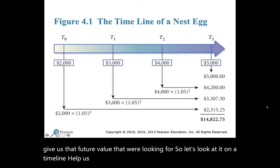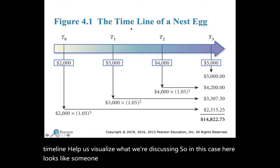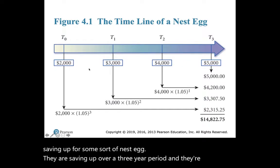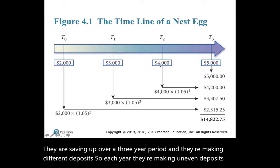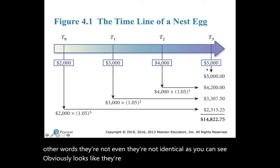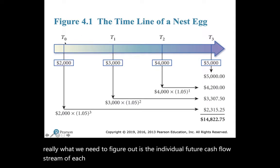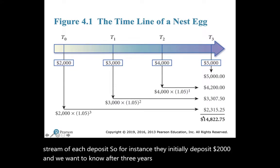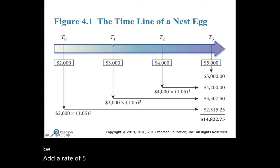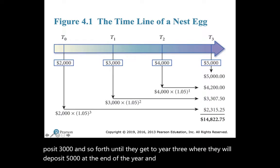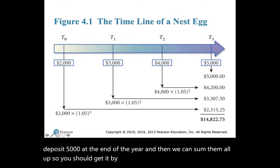Let's look at it on a timeline. Someone is saving up for a nest egg over a three-year period, making uneven deposits — they're not identical, and they appear to be increasing each year. What we need to figure out is the individual future value of each deposit. For instance, they initially deposit $2,000 and we want to know its value after three years at a rate of 5%. After year one they deposit $3,000, and so forth until year three where they deposit $5,000, and then we sum them all up.